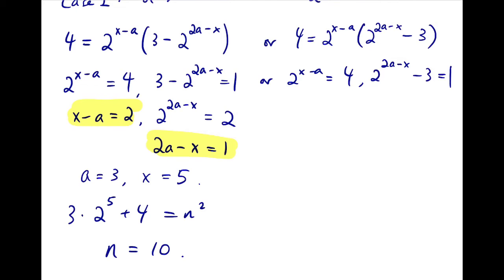And for the other part, we can solve it in a similar way. x minus a is again 2, and then 2 to the 2a minus x is 4, so 2a minus x is then 2. Again, we have two linear equations in two unknowns, and we can add them up to solve for a. Here a is 4, and so x is 6.